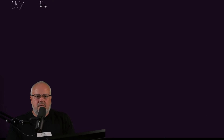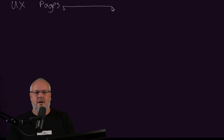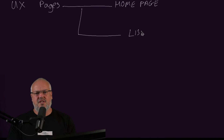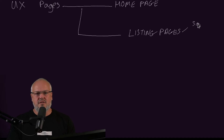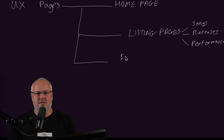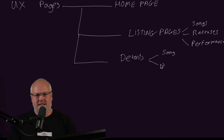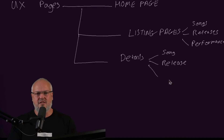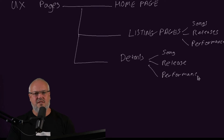Let's look at the types of pages we need. Obviously there's a homepage for highlighting releases and performances. We need pages to help us navigate through lists of songs, lists of releases, lists of tours, and lists of performances. We need pages that view the details of songs, the details of releases, and the details of performances. These detailed pages should not just bring together the details of each concept, but bring them to life with associated media such as images and video.